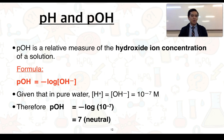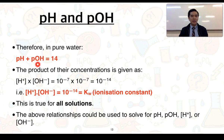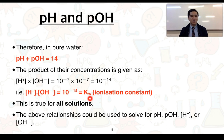We can also consider the pOH, which measures the concentration of hydroxide ions: pOH equals negative log of [OH⁻]. In pure water, [OH⁻] is 10⁻⁷ mol/L, so pOH equals 7. Therefore pH plus pOH equals 14, corresponding to the total range of the pH scale. The product [H⁺][OH⁻] equals 10⁻¹⁴, known as the ionization constant of water (Kw), and this relationship holds for all aqueous solutions.